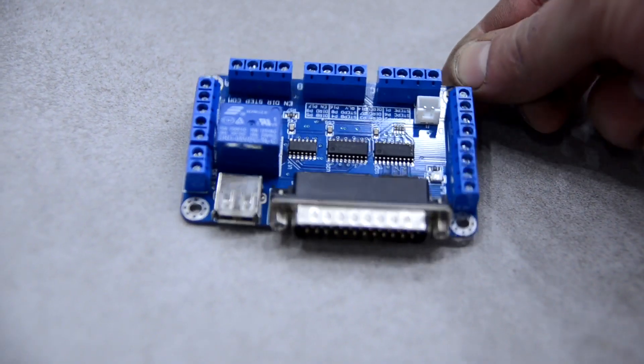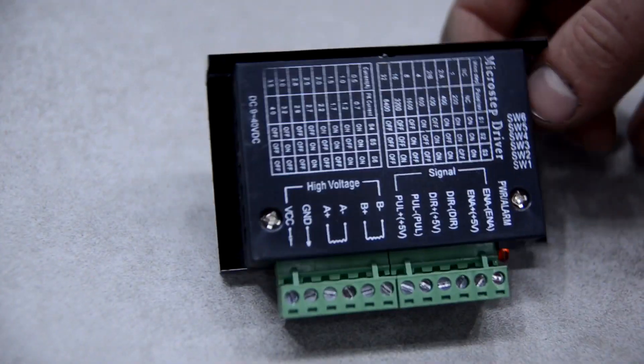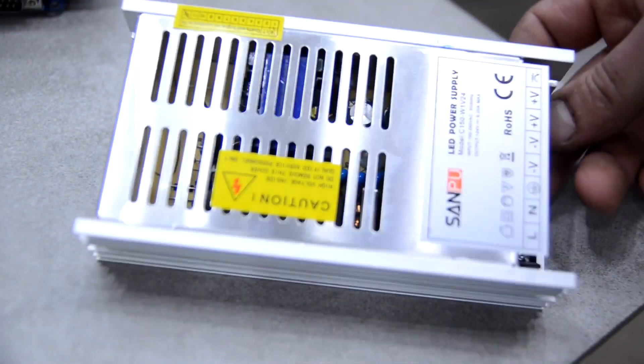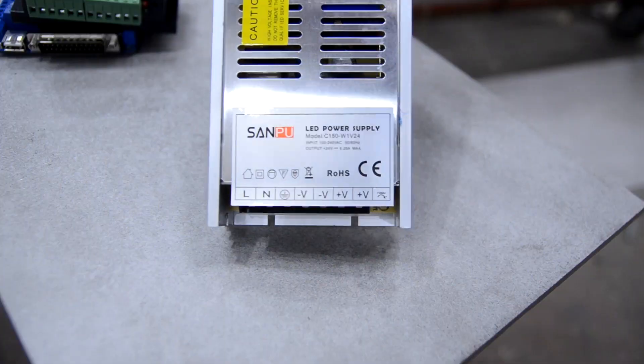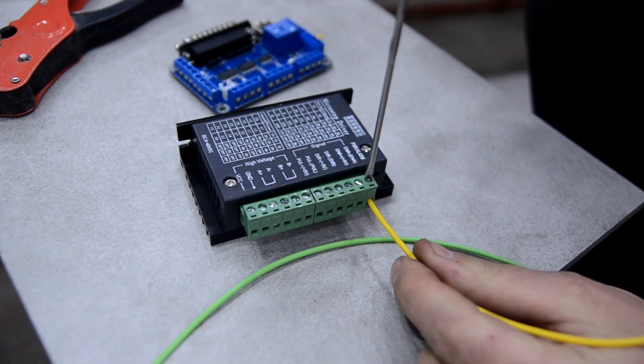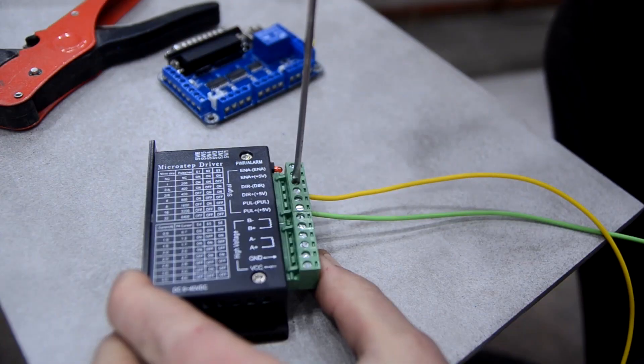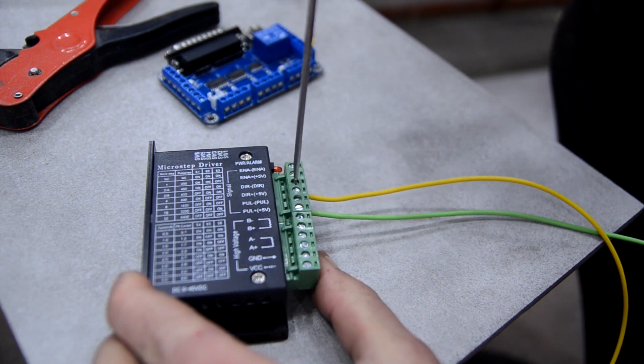I also bought a 5-axle octocoupler board, drivers for each engine, power supply units for 24V, one for the Y axis and another one for the X and Z axis. I assembled everything according to the picture I found on the internet.